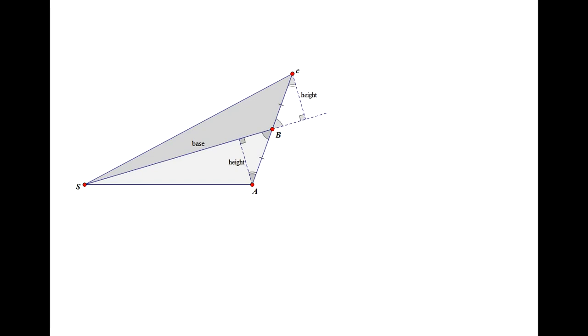Since the triangles have equal areas, we've proved that from the perspective of a point in space S, a planet moving in a straight line at a constant velocity sweeps out an equal area in equal time. This sounds a lot like Kepler's second law. If the planet traveled to a point d in the same time interval delta t, the area SCD would equal the area of SBC and SAB.